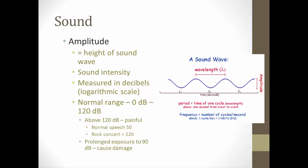Amplitude is the other way to characterize sound. Amplitude is the height of the sound wave and gives us sound intensity, or how loud it is. This is measured in decibels, ranging from 0 to 120. Zero decibels is the quietest sound we can hear, whereas 120 decibels causes pain. Normal speech is about 50 decibels; a rock concert can be as high as 120 decibels. Prolonged exposure to more than 90 decibels can cause damage to the inner ear.